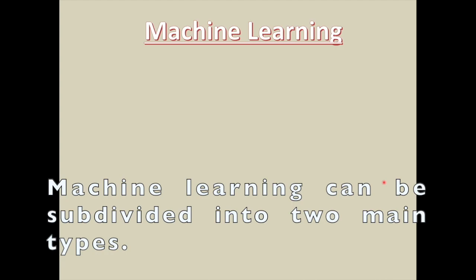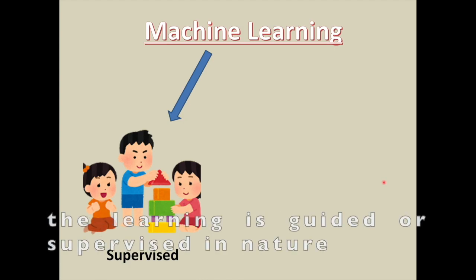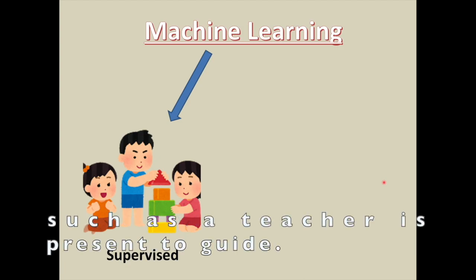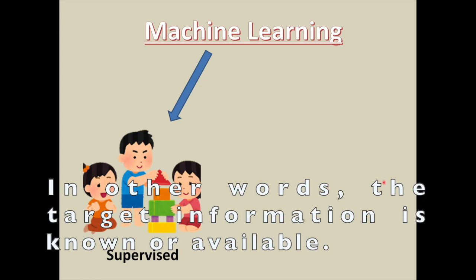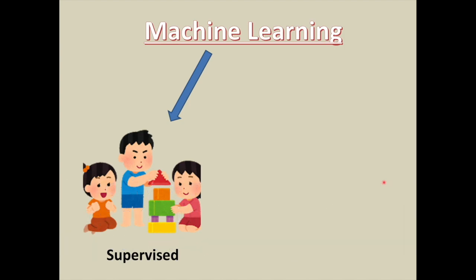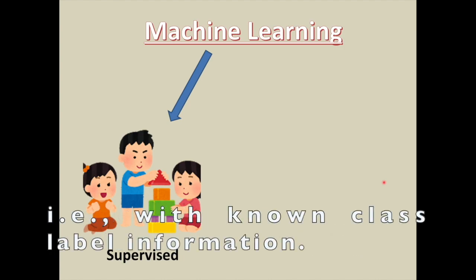Machine learning can be subdivided into two main types: supervised learning, where as the name suggests, the learning is guided or supervised in nature, such as a teacher is present to guide. In other words, the target information is known or available. The learning of machines is carried by known data, that is, with known class label information.